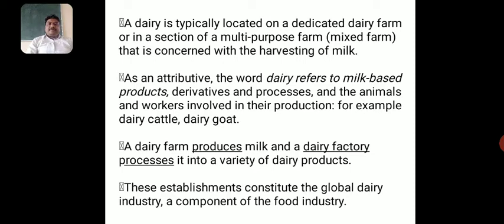As an attribute, the word 'dairy' refers to milk-based products, their derivatives and processes, and the animals and workers involved in their production — for example, dairy cattle and dairy goat. A dairy farm produces milk and a dairy factory processes it into a variety of dairy products. These establishments constitute the global dairy industry, which is actually a component of the food industry.